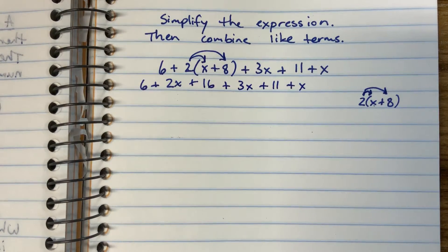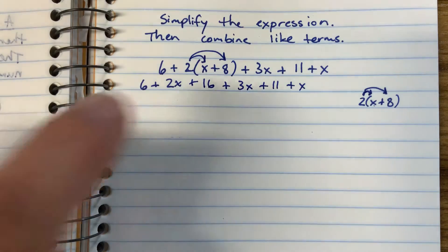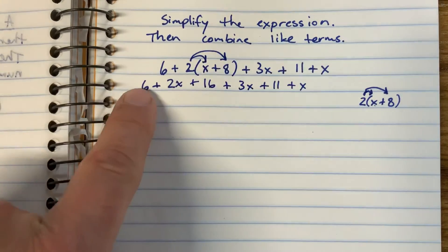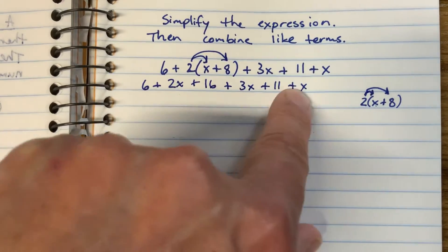So we've simplified the expression. Now we need to combine the like terms, so we're only putting together the things that are similar.